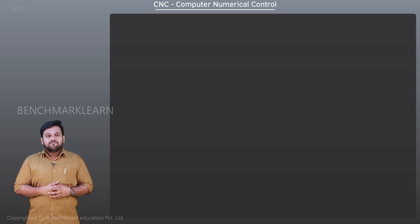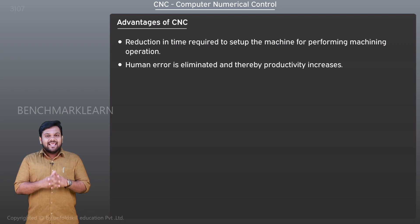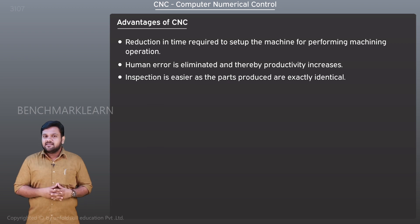CNC has several advantages such as reduction in time required to setup the machine for performing machining operations. This leads to time saving. Human error is eliminated and thereby productivity increases. Inspection is easier as the parts produced are exactly identical.